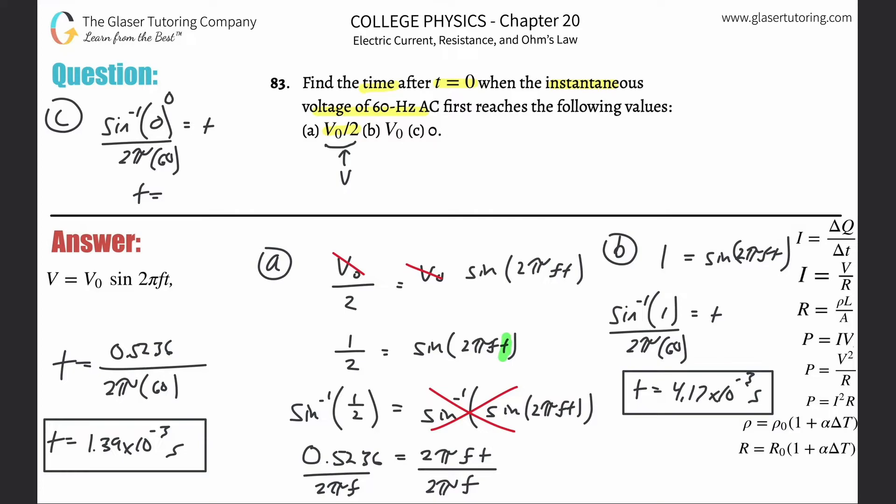This on the bottom, it doesn't matter what the heck it comes out to. Zero divided by any number is going to be zero, as long as the denominator is not zero, which it is not. So the answer could have been T equals zero seconds. But it says find the time after T equals zero. So that is an answer, but it ain't going to work. Obviously, what's the instantaneous voltage at time zero when it didn't even draw any current? Well, it's zero. There's no voltage being applied.